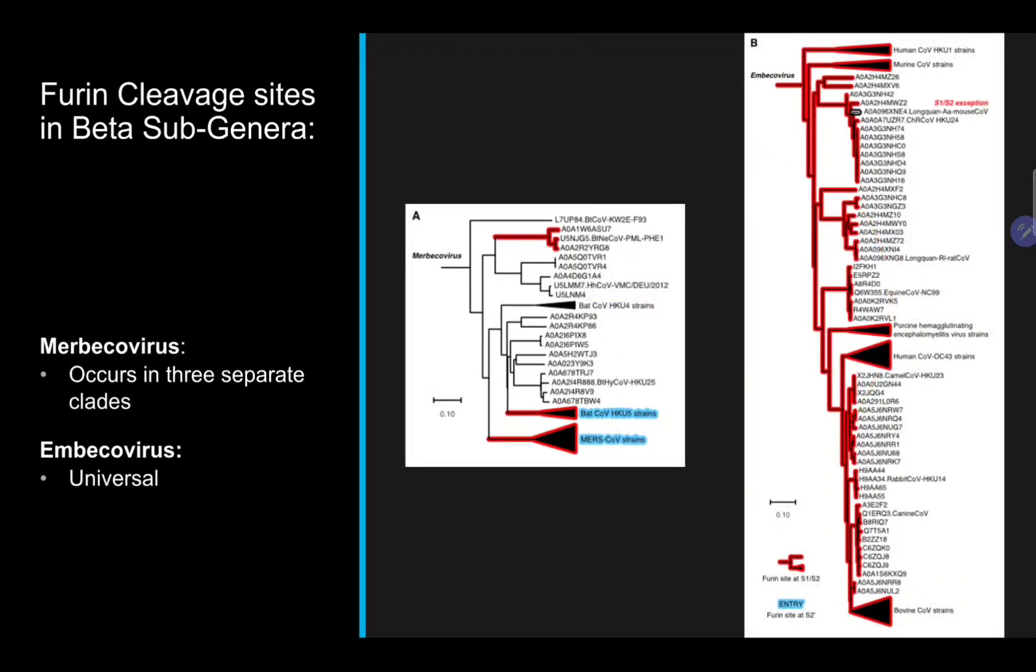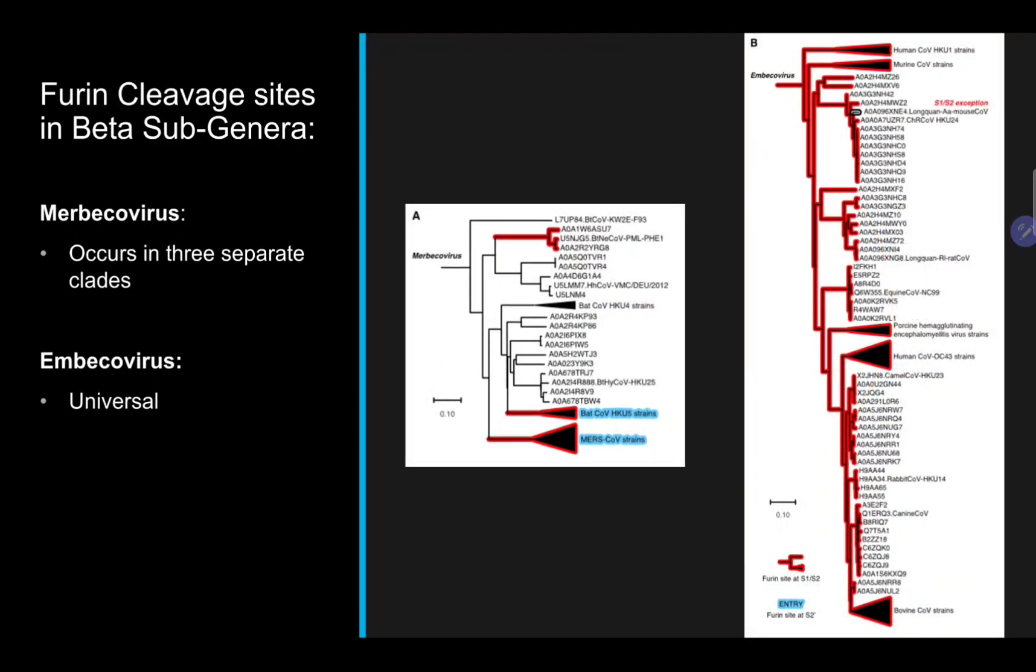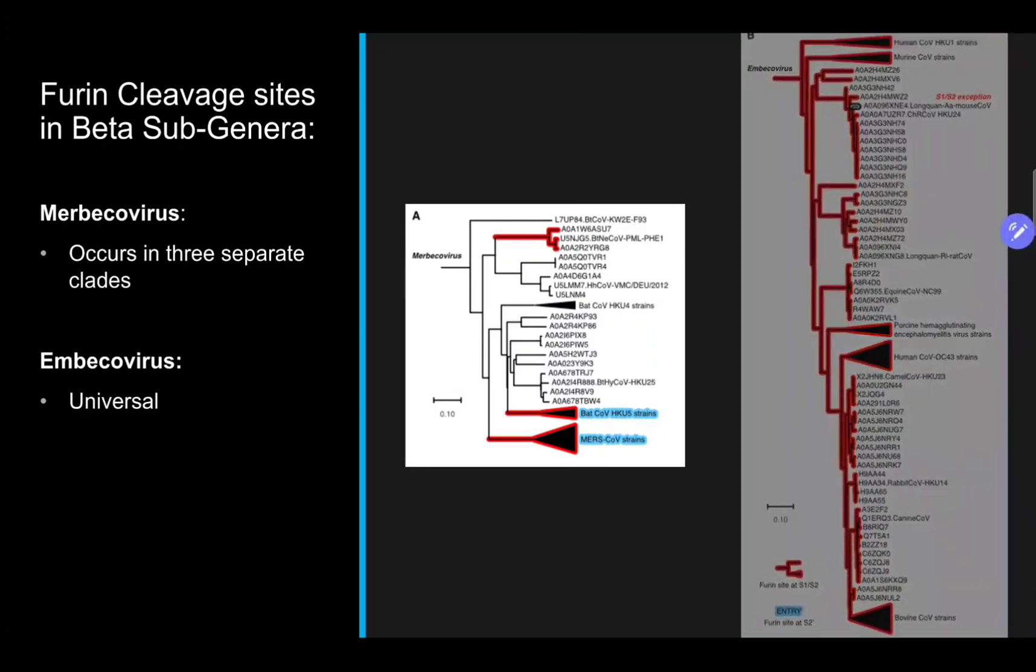However, in the Merbecovirus group, the cleavage site occurs in three separate clades. This includes the well-known MERS virus as one of the clades. In the MERS virus group, the S1/S2 cleavage site is universal.